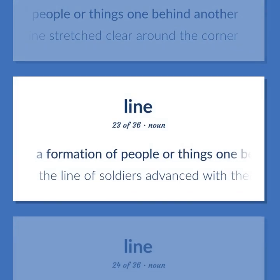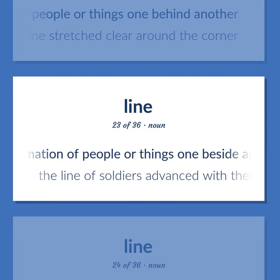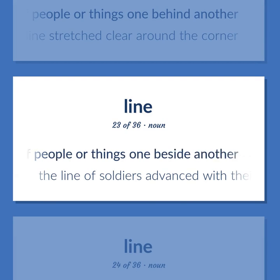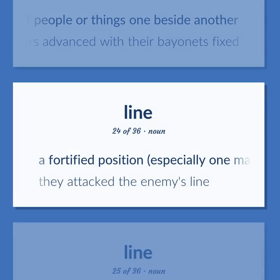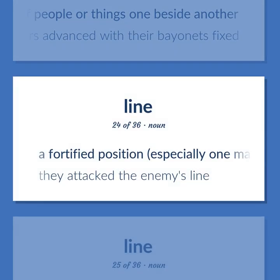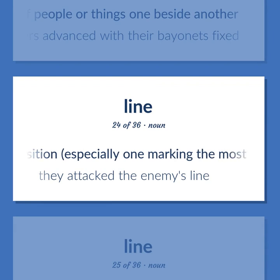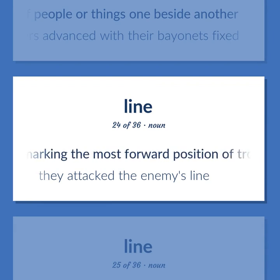A formation of people or things one beside another. The line of soldiers advanced with their bayonets fixed. A fortified position, especially one marking the most forward position of troops. They attacked the enemy's line.